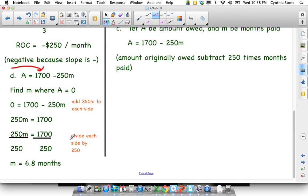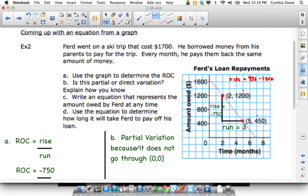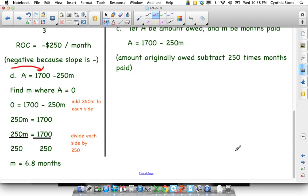And you know your answer's good if you can look on here and it looks about right. So you should check that. It's important. So if you got, you know, 2700 months or something, you look at the graph, you know you're wrong. It's not going to take that long to pay off the loan. Just make sure you look at the graph to make sure your number makes sense if you have a graph to use.